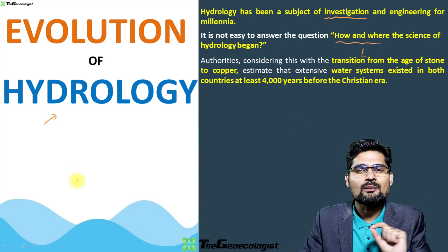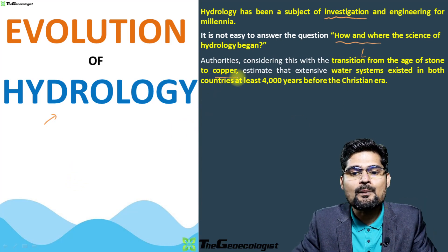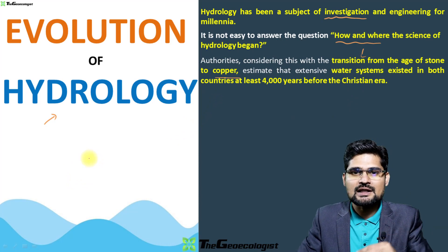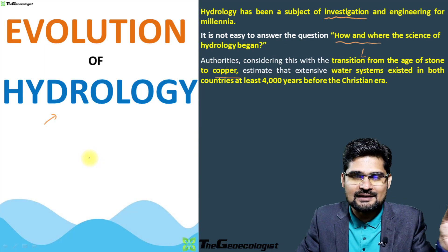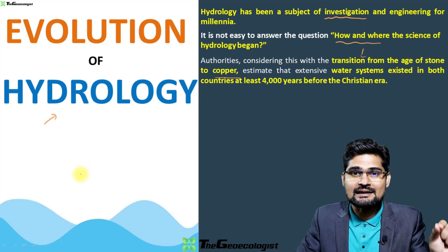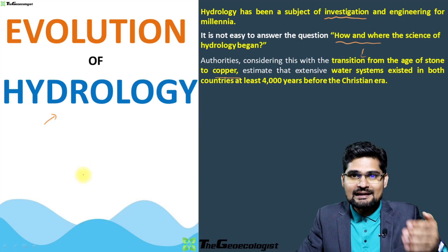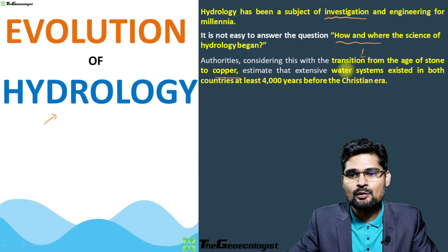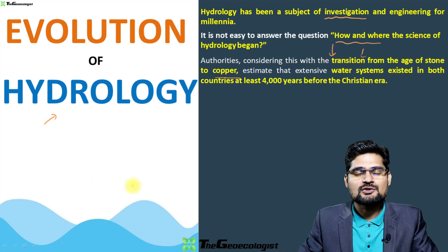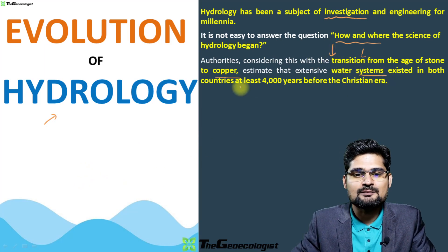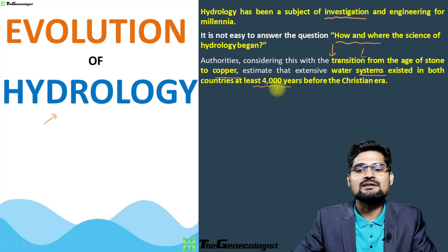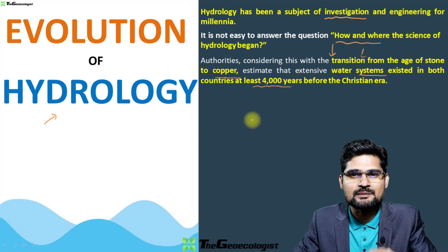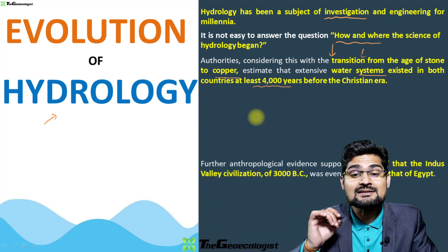There was a transition from the stone age to the copper age. From the old stone age, from the lithic periods — from neolithic to chalcolithic and further towards civilizations — we observe the bronze age civilizations where it largely develops. Water systems existed in countries about 4000 years before the Christian era, so roughly 4000 to 4500 BC, and we trace how it has evolved till present.